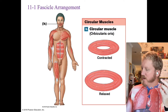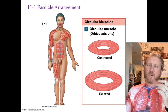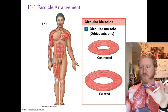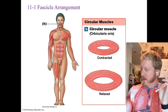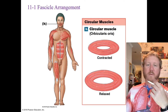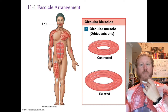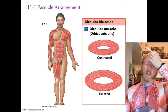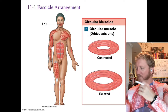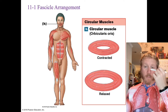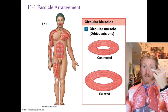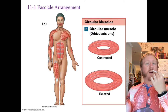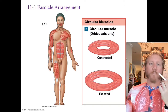Circular muscles are named because they are circular and typically act as sphincters — valves in the urinary and digestive tracts — and surround openings in the body. You have circular muscles around your eyes, responsible for closing and opening them, and around your mouth, responsible for opening and closing the lips.